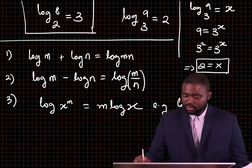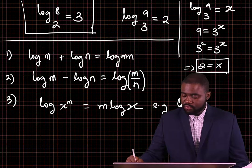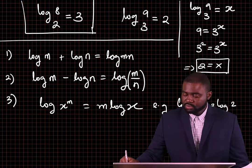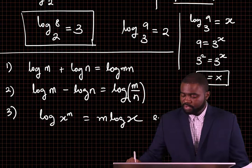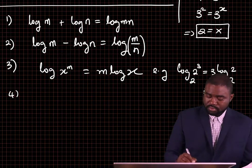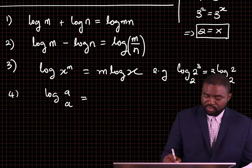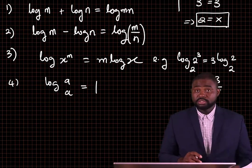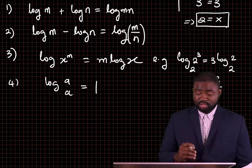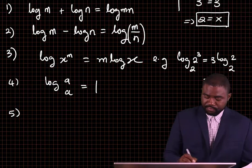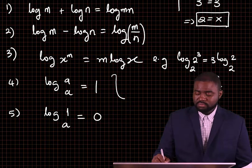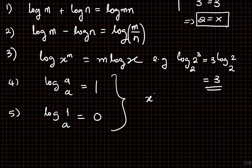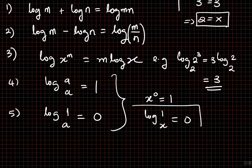For example, the log of 2 raised to the power 3, base 2, is equal to 3 log 2 base 2. The number to which 2 must be raised to give 2 is 1, so this is just going to be equal to 3. Fourth, the log of a to base a is equal to 1 — in other words, the log of a number to the same base is always equal to 1. Fifth, the log of 1 to any base is equal to 0. We know that x raised to the power 0 is 1, therefore the log of 1 to base x must be equal to 0.